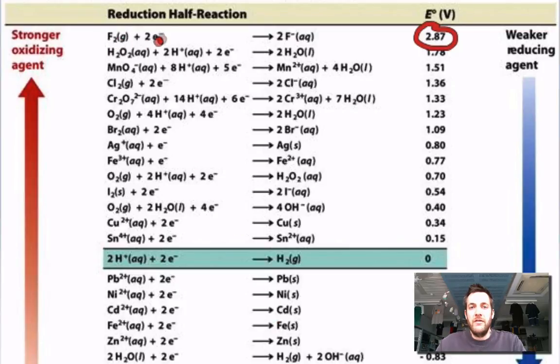So in other words, fluorine is very good at taking electrons away from things and turning into fluoride ions. It's a very strong oxidizing agent. Likewise, fluoride ions, because they're very bad at giving up electrons and reducing other things, are very weak reducing agents.